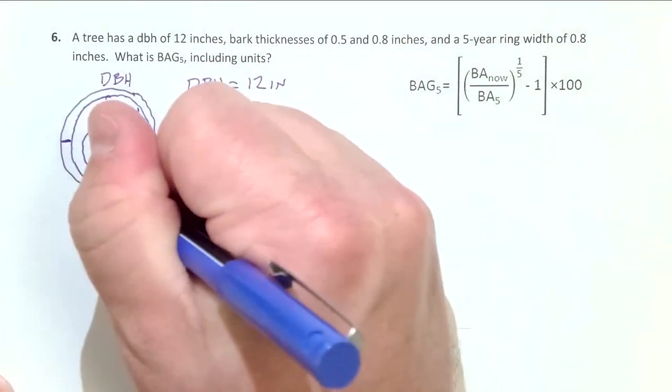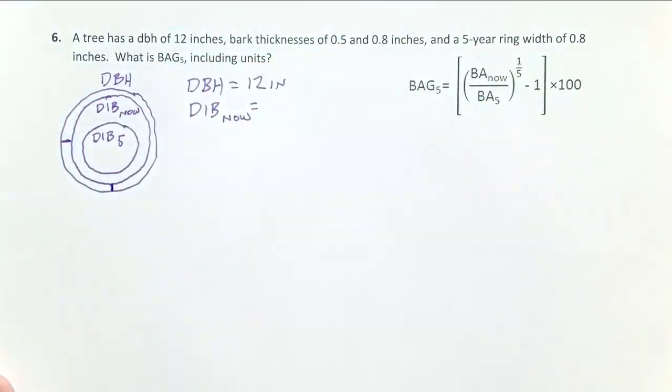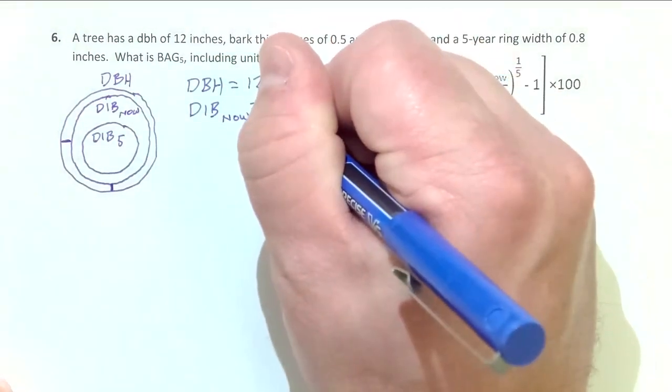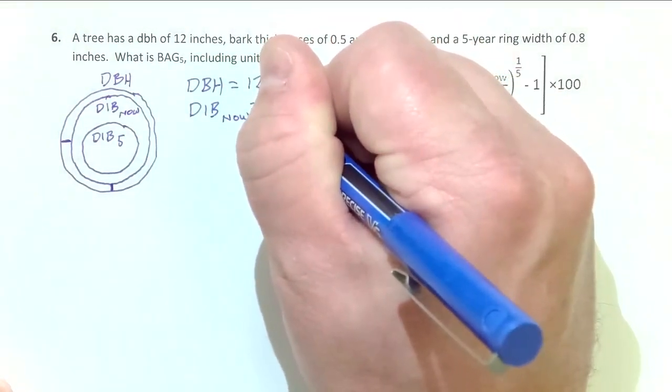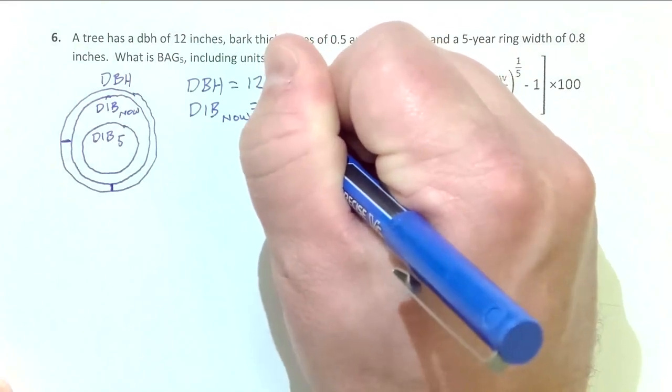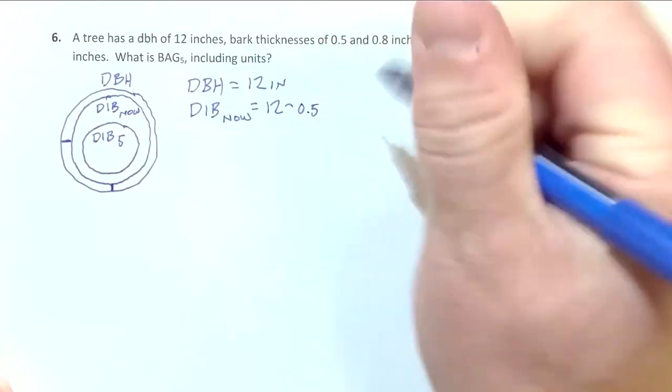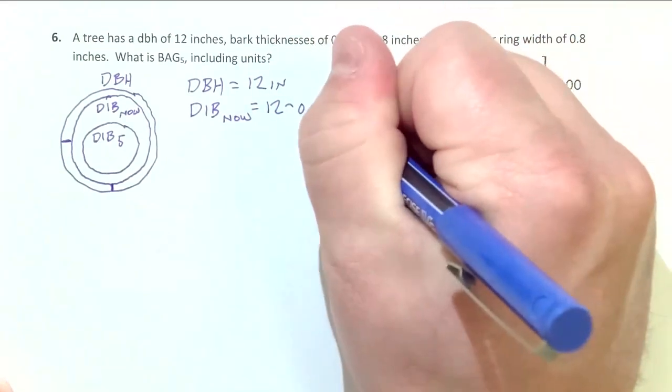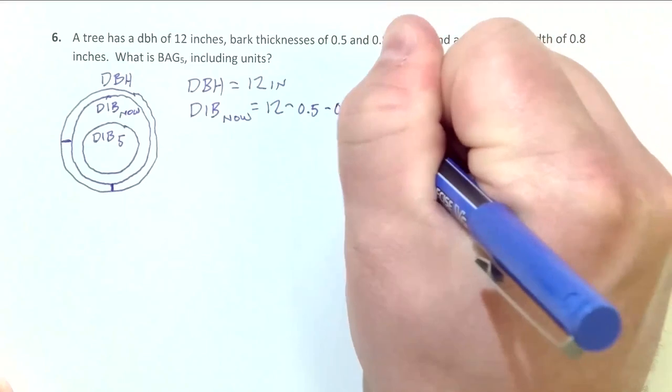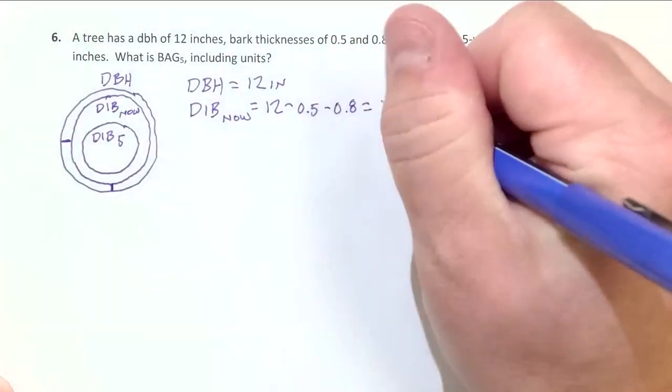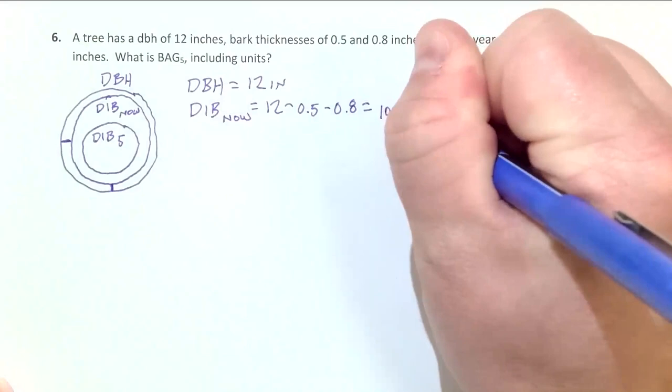Our diameter inside the bark now is going to be calculated by basically removing the bark. There's a thickness of the bark we measured, we may have measured another thickness over here. So if you simply subtract both those thicknesses out, it's removing it across the diameter. For this problem, all these units are in inches. I'm not going to include them just to abbreviate this. It's going to be 12 minus 0.5 minus 0.8 equals 10.7 inches.